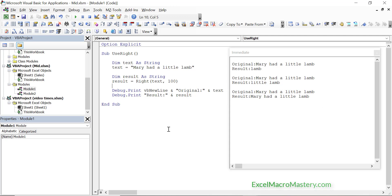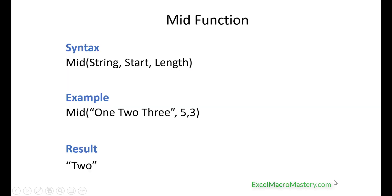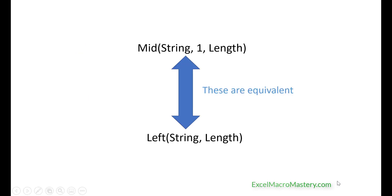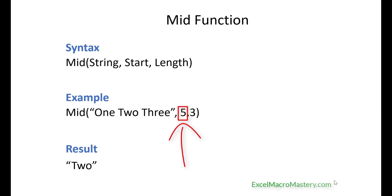Anytime we supply a length that is greater than the length of the string, it will return the entire string. That is how we use the right function. Later in the video we'll see how right is sometimes used with the InString reverse function. So now let's take a look at the mid function. Mid extracts text from the middle of the string as the name implies. Mid is very similar to left — the main difference is that mid has one more parameter, which is used to specify where we start in the string. Let's look at some examples so that we can understand it better.